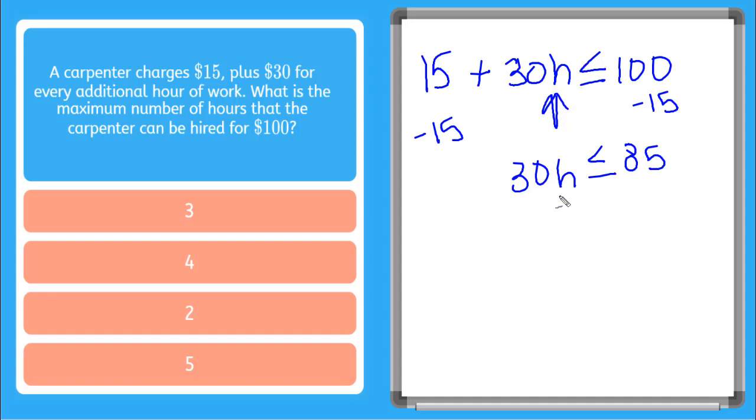I want to get that H by itself. We're dividing both sides by 30. So the number of hours is less than or equal to 85 divided by 30 is equal to 2.8.